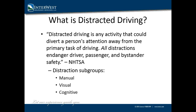Distractions can be broken up into three main subgroups. Manual, which are any distractions that take your hands off of the wheel. Visual, distractions that cause you to take your eyes off of the road. And lastly, cognitive distractions, which include any distraction that can take your mind off of the primary task of operating the vehicle safely.